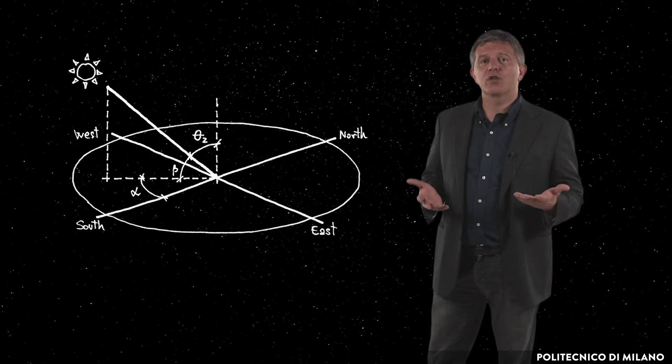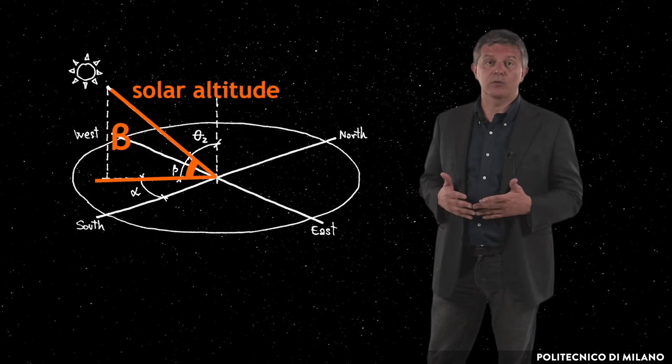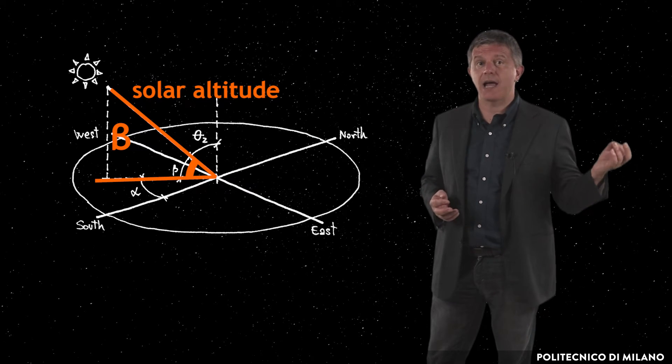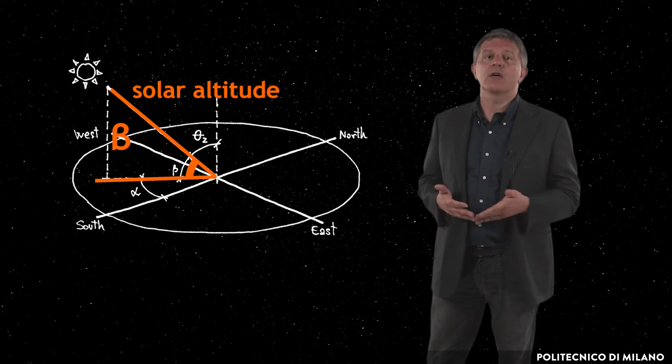Each point of solar paths corresponds to a specific position of the Sun with respect to the observer. This position can be defined through two angular coordinates. Solar altitude beta, represented by the angle between the line joining the center of the Sun with the observation point and the horizontal plane.